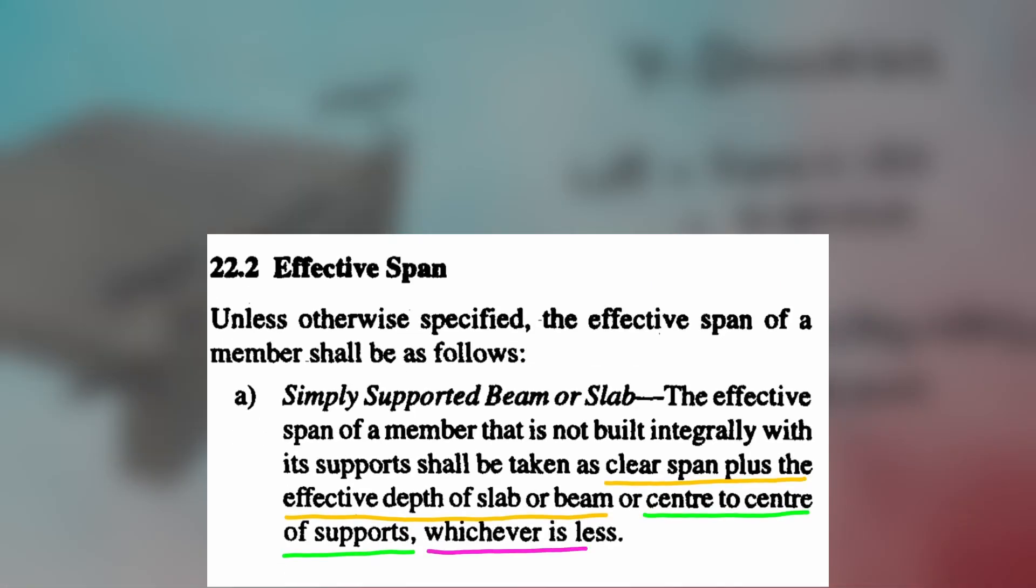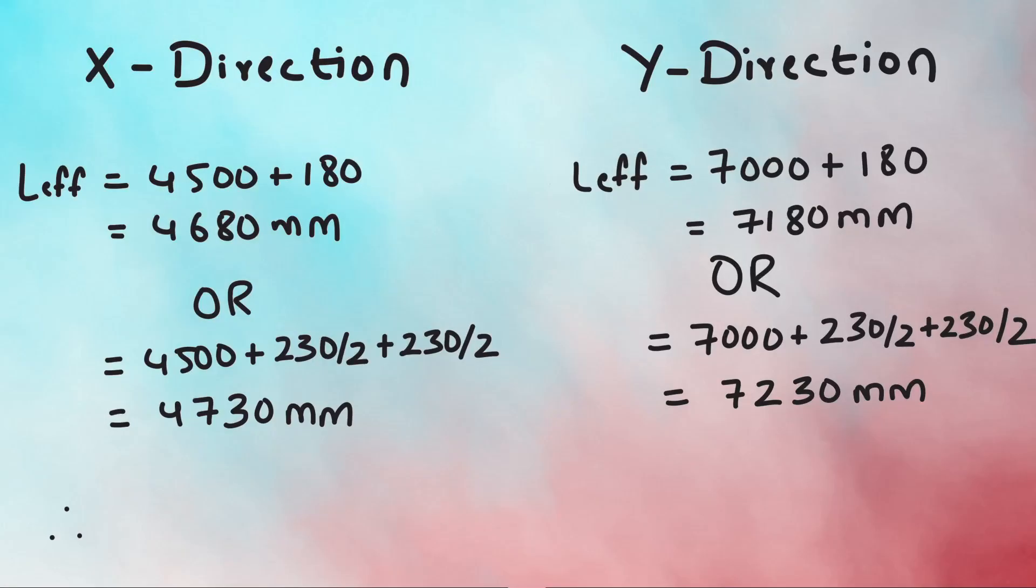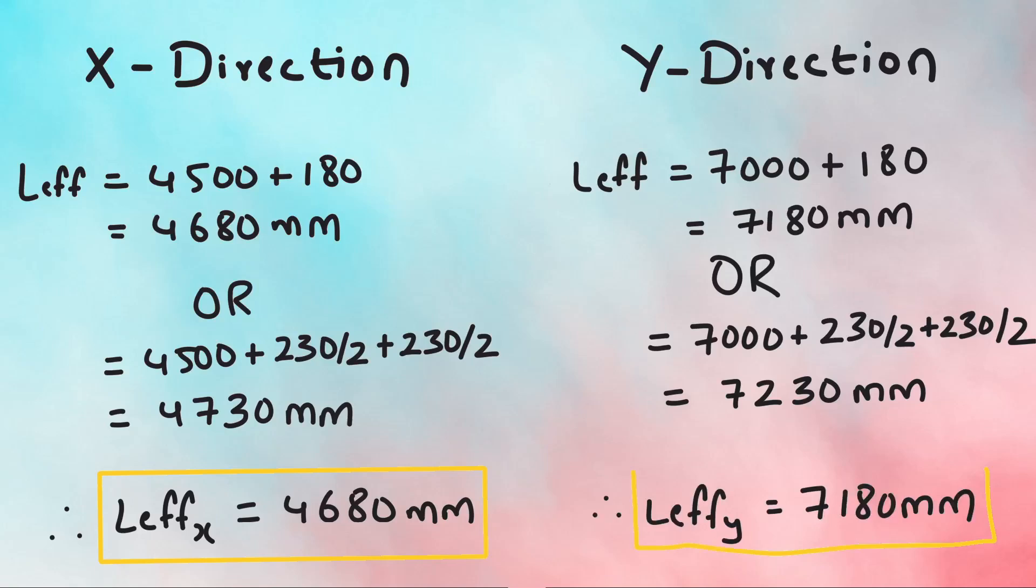The lesser of the two values has to be taken. So, for X direction, L effective is 4680 mm, while for Y direction, the L effective is 7180 mm.